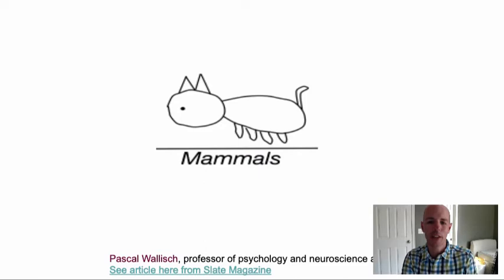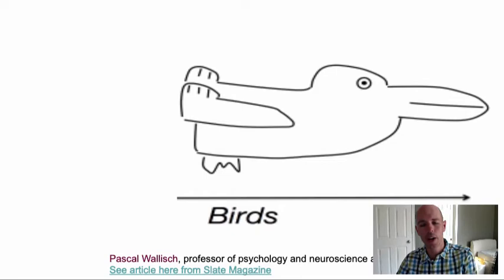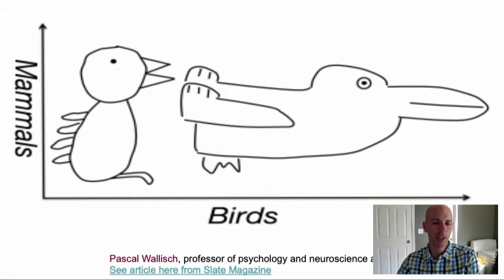Another example: because you see the word 'mammals' under an image, you're more likely to see the animal as a mammal. And this ambiguous figure — if you see it on its own you might see a rabbit, but if you see it next to a bird image you are much more likely to see it as a bird. You're not consciously deciding to see a bird — the surrounding context does it. The more context around the sides, the stronger the effect.